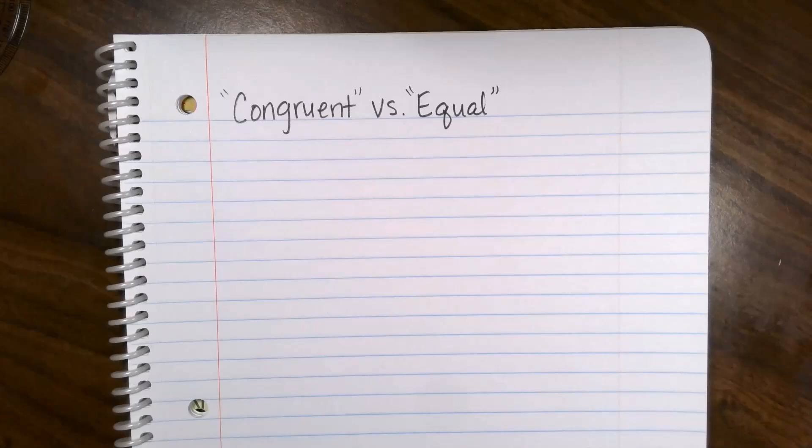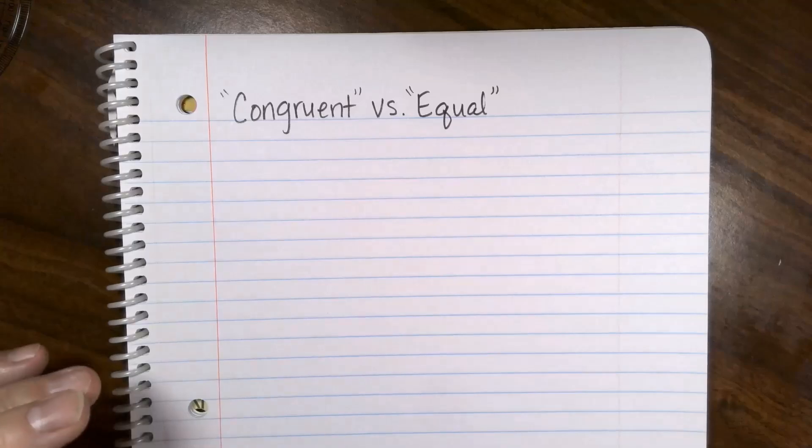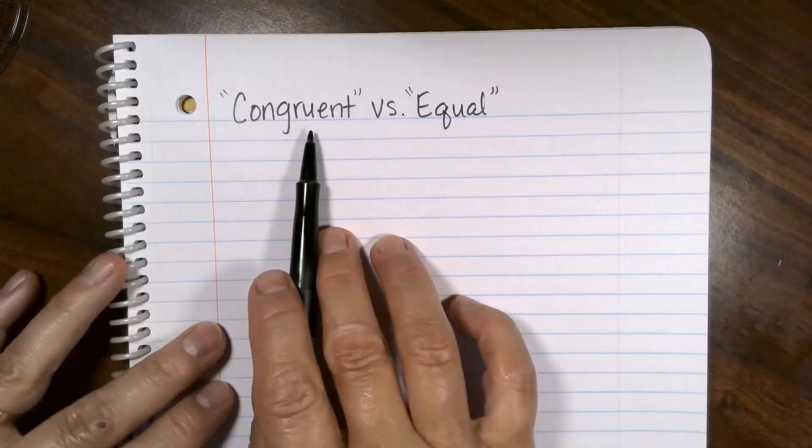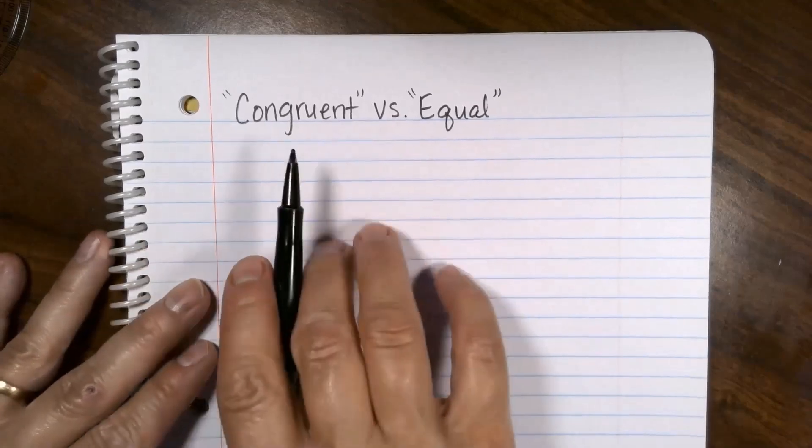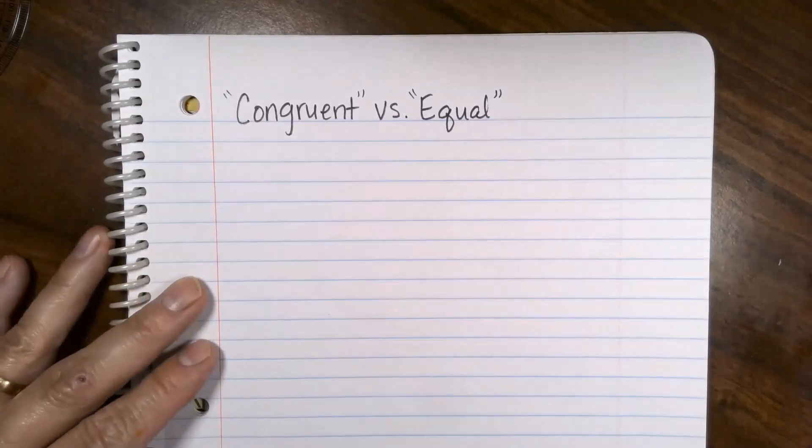Hi, this is Tammy, and I do math for coffee. In this video, I'd like to take a moment to talk about congruent versus equal, because this is an important concept in geometry, and it's confusing. We use the word congruent a lot. We use the word equal kind of like normal because it's a math class, but congruent is a word that's pretty much just used in geometry.